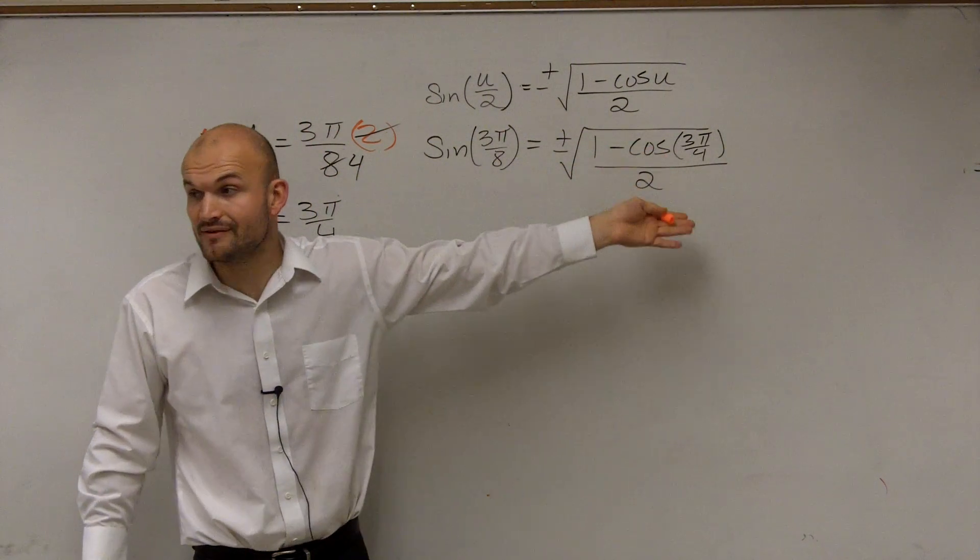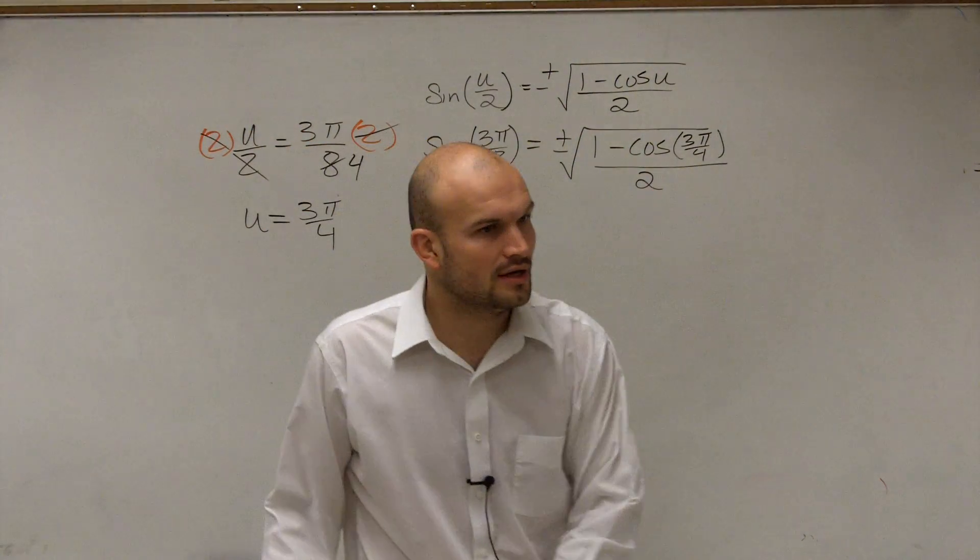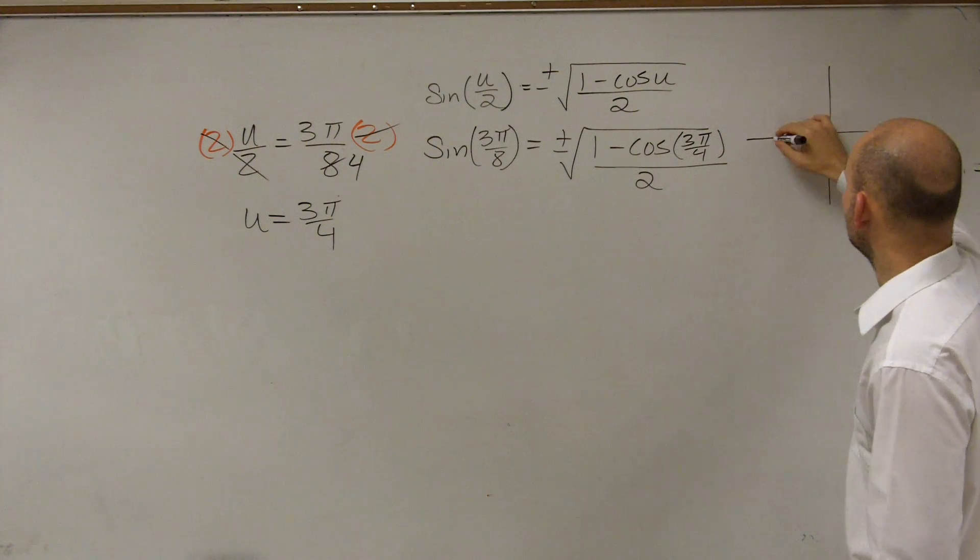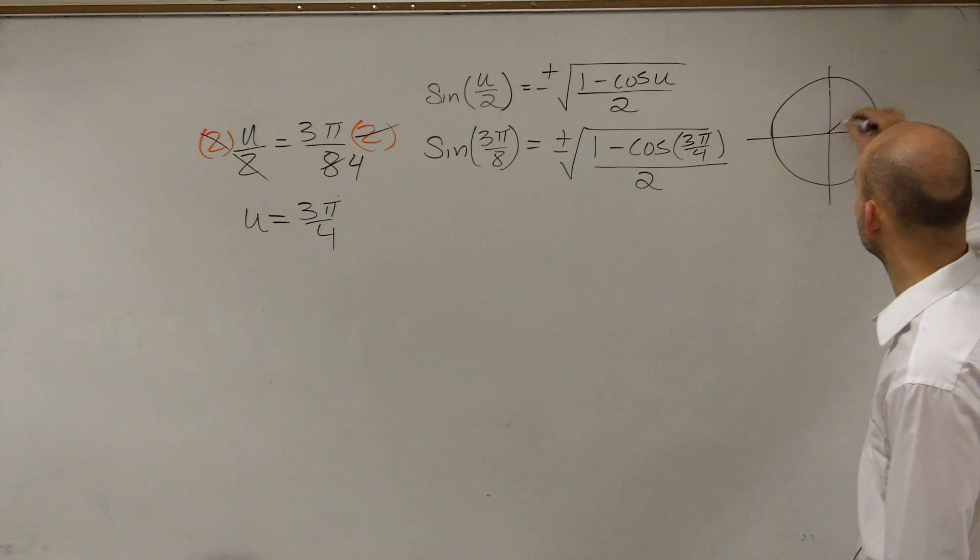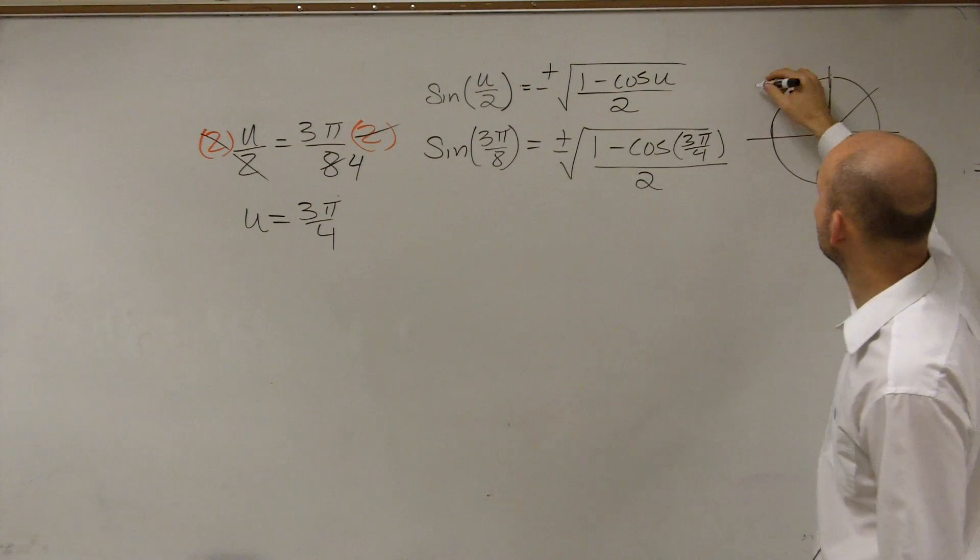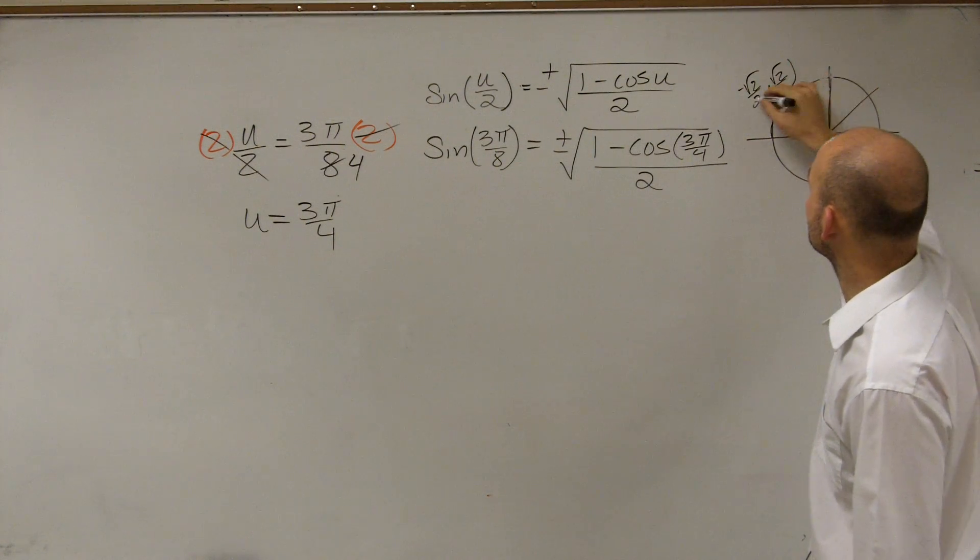So now we say, all right, the cosine of an angle. Well, we've been practicing finding the cosines of angles since chapter 4. So what we do is we go to our unit circle, and we figure out where is the cosine of 3π over 4. Well, here's 1π over 4, 2π over 4, 3π over 4. And we know that 3π over 4 has a coordinate point of negative square root of 2 over 2 comma square root of 2 over 2.